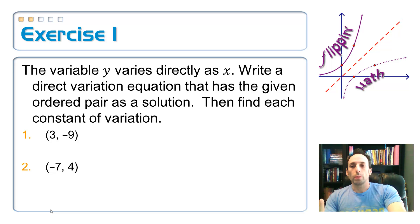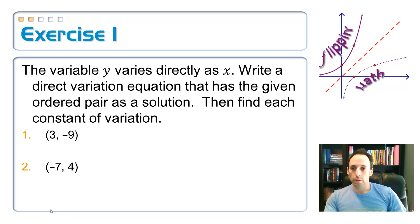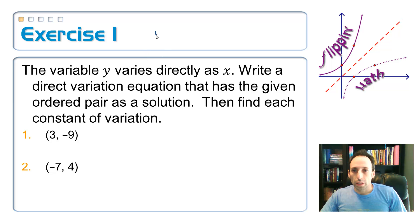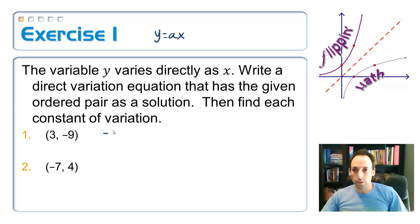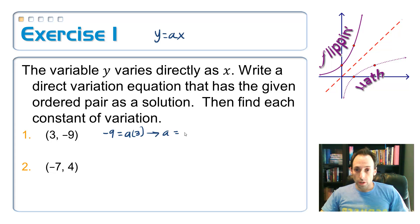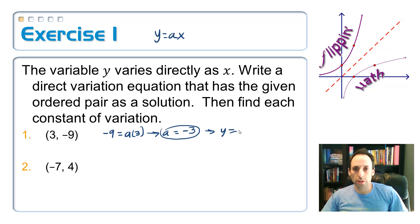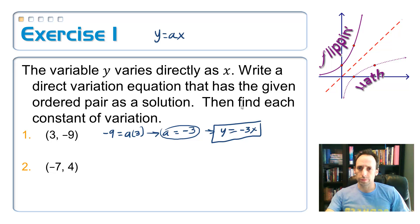Variable y varies directly with x. Write an equation given a point that shows direct variation, and find the constant of variation. So y = ax. The y-coordinate is −9, so −9 = a times 3. Divide both sides by 3 and I get a = −9/3 = −3. There's the constant of variation, and the equation is y = −3x.